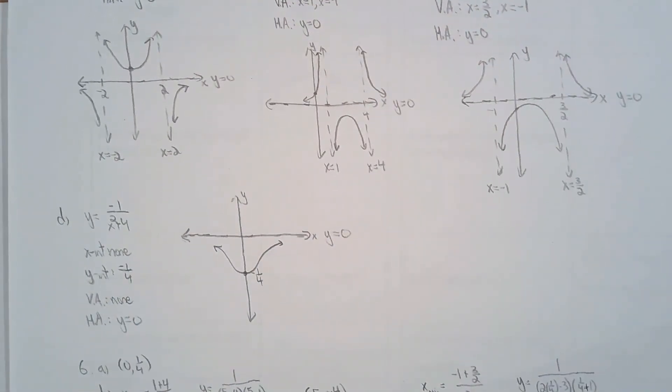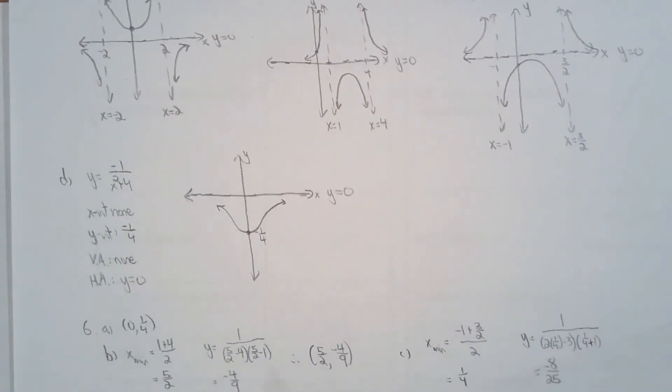For question 6, they asked us to find the local max or local min if it existed. And that only existed for, let's see, 5a, b, and c. Because for 5d, it was a global minimum point. It wasn't a local max or local min.